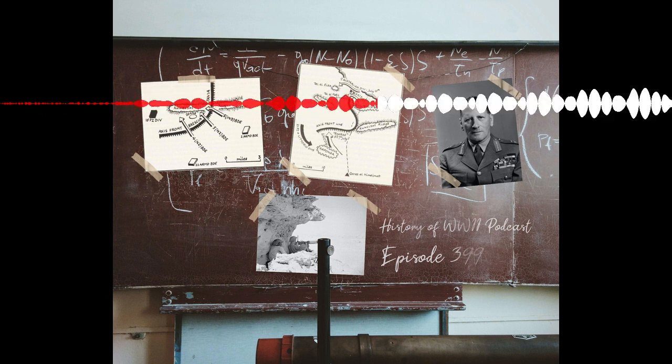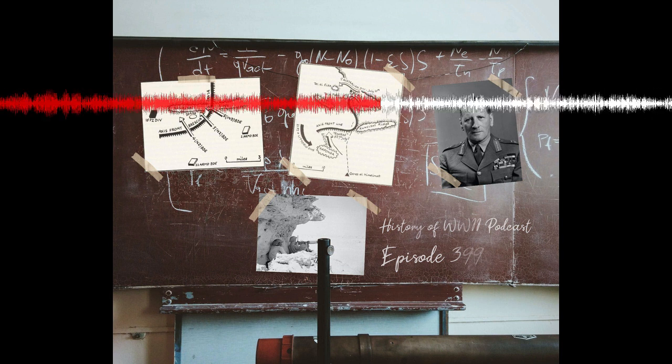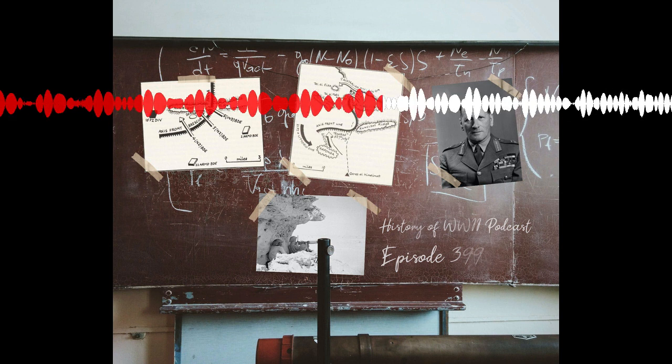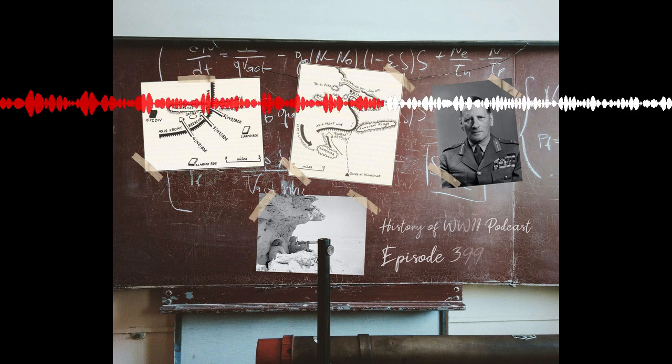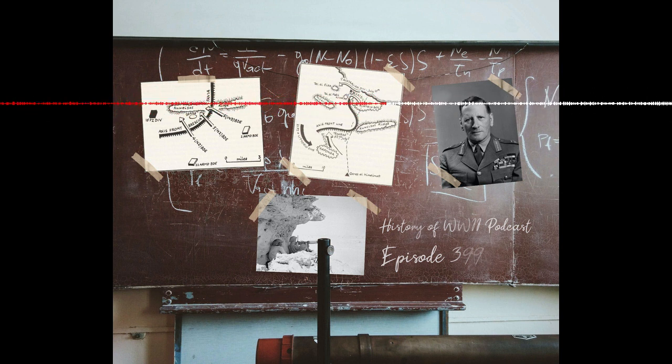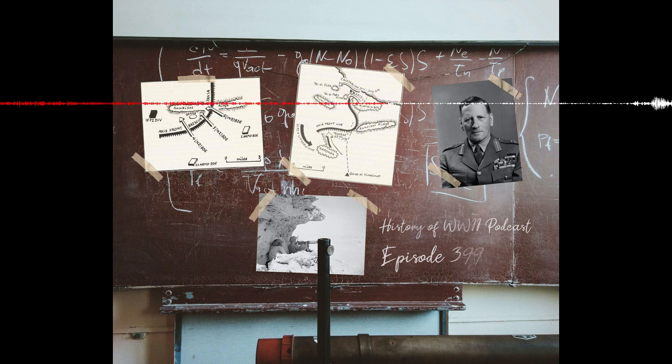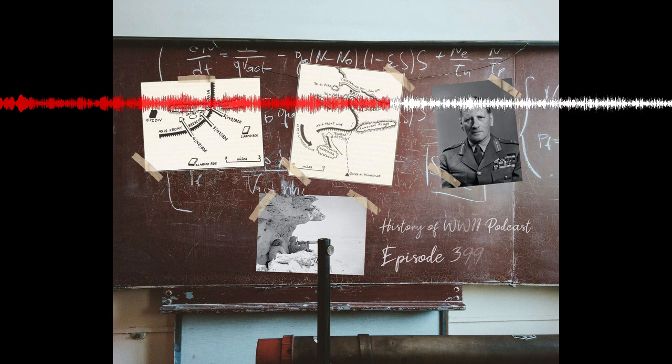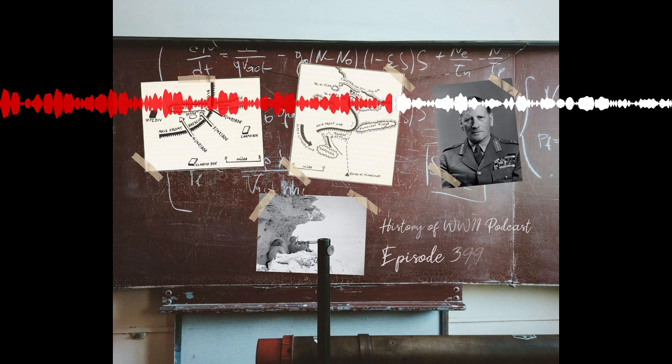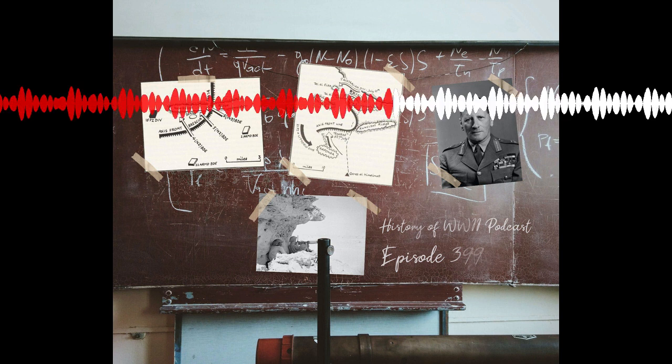Watching these units head out, Rommel was probably hopeful that they would find something. That is, until he heard the sound of gunfire to his north. Rommel realized he had just been outfoxed and so ordered back his mobile units. They now needed to accompany him to the north to put out whatever fire the enemy had started.